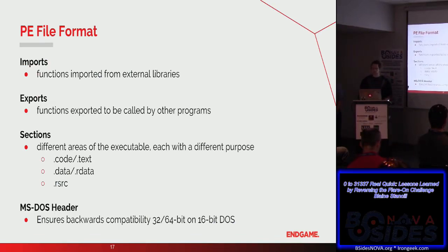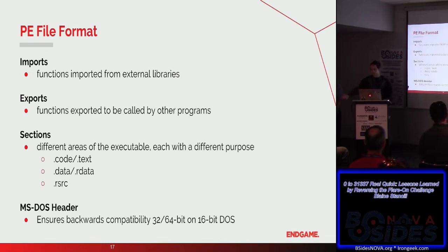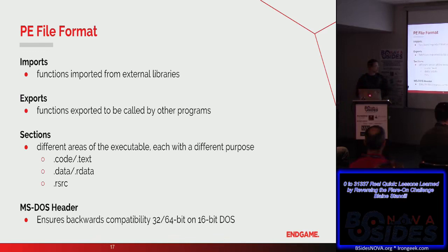Imports are where a binary needs functionality it doesn't contain, so it asks other executables. At the opposite end, those binaries that give out functionality have exports. Sections within the PE file format are like different modules: there's the code or text section where actual code lives, data sections for global variables, initialized and non-initialized variables, and the resource section where you can store icons, images, other executables — almost anything you want. Then we have the MS-DOS header, which is always there for backwards compatibility. If you want to get a feel for what a binary does without running it, look at its imports — they reveal behaviors and capabilities the binary will need.